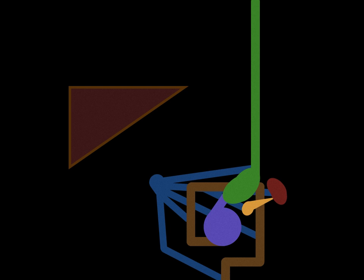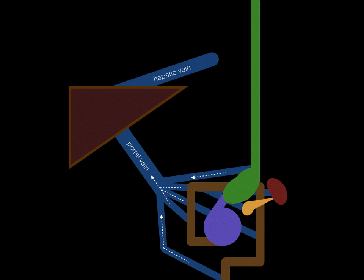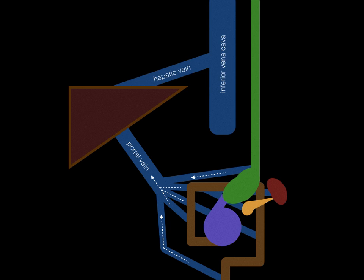Blood from these digestive organs contains deoxygenated nutrient-rich blood which flows through the portal vein into the liver for processing, before release into the systemic circulation via the hepatic vein and the inferior vena cava back to the right side of the heart. The portal circulation can be considered as any of these vessels in blue.